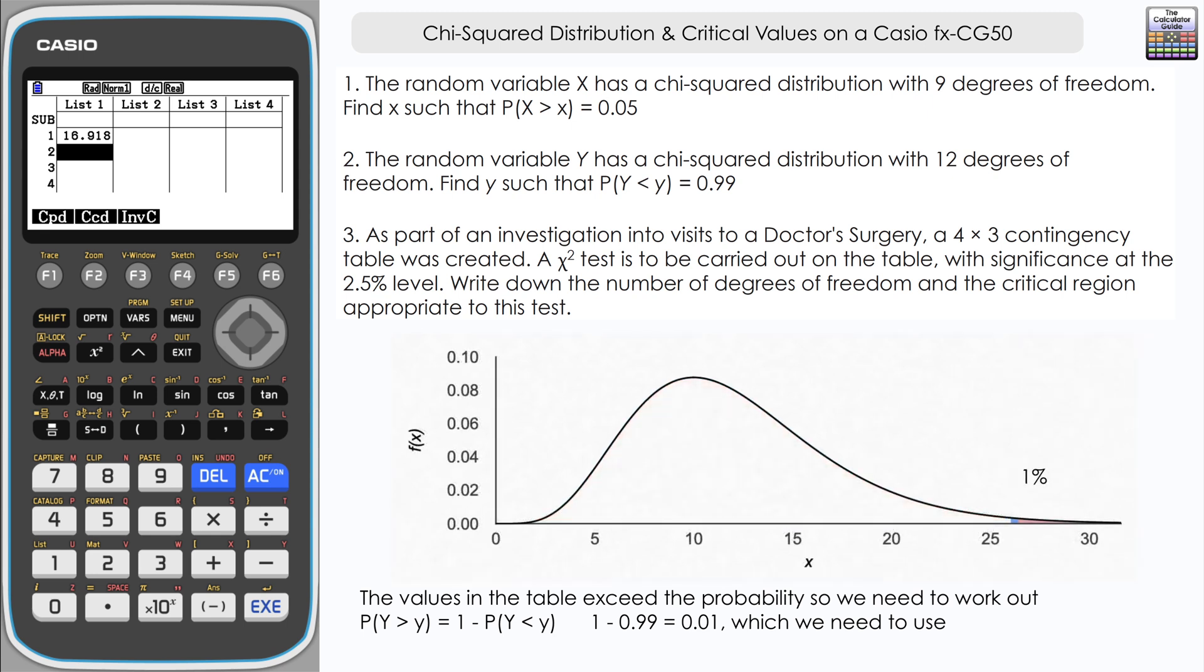If we know less than is 99%, we know greater than is 1 percent. So that's what we're going to put into the calculator. We're going to put 0.01 because the values will exceed that.